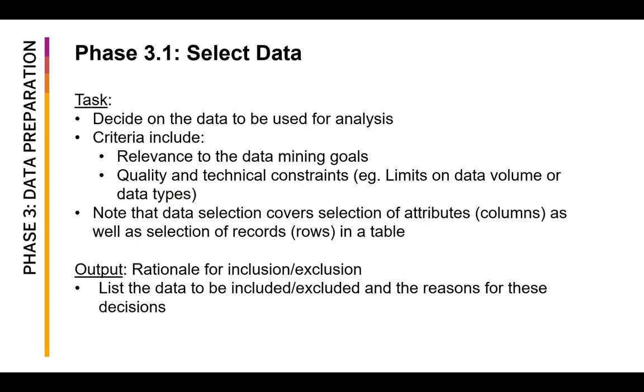First is selecting the data. It is where we decide which data are we using for analysis. When thinking about the data to be used, we usually think about its relevance into the data mining goals, at the same time its quality and technical constraints, whether our libraries are efficient enough to support huge amounts of data or whether they can support the data types that we have. In this phase we don't just select the attributes, but at the same time we also select the number of records or rows in a table. From a documentation perspective, the output of this phase is a list of reasons why we select or exclude such rows and columns in our dataset.